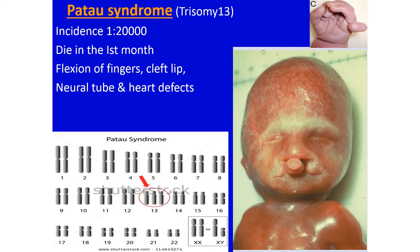Patau syndrome is due to an extra copy of chromosome 13. The incidence is 1 in 20,000 babies, and they die in the first month after birth. Features include flexion of the fingers, cleft lip, abnormality in the formation of the upper or lower lip, neural tube defects — reflecting malformation of the central nervous system — and heart defects.